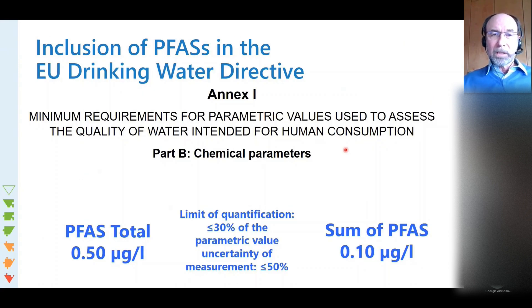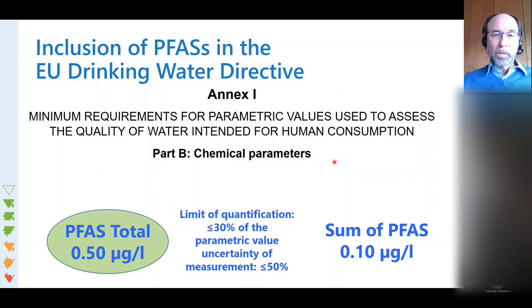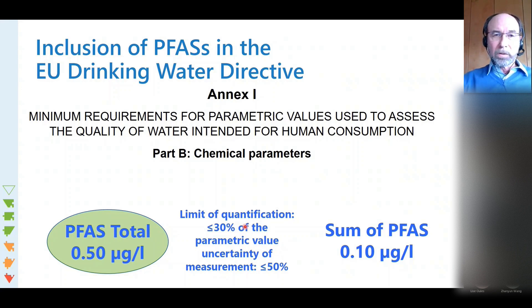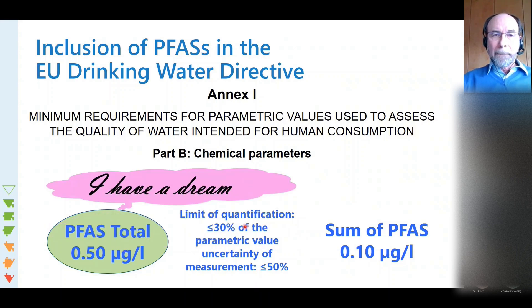Interestingly, the first regulation for PFAS is given for a sink, meaning for drinking water, in the new EU drinking water directive. There is one parameter defined, so-called PFAS total, with a parametric value of 0.5 microgram per liter. This parameter is not further specified by a certain method or protocol, but a limit of quantification of less than 30% of the parametric value and an uncertainty of measurement of less than 50% are given. Still, there is no standard method which could serve to control this parametric value - more or less this idea of a PFAS total parameter is still a dream.